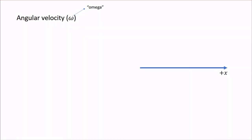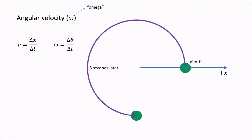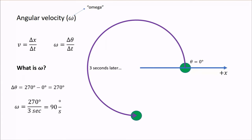Next, we have the concept of angular velocity. It is usually denoted by the Greek letter omega. You already know what velocity is — it is the change in position over time. Similarly, angular velocity is the change in angular position over time. For example, if your object starts at an angular position of 0 degrees and 3 seconds later it ends up at a position of 270 degrees, we first find the change in angular position, which is 270 degrees minus 0 degrees, equaling 270 degrees. We then divide by 3 seconds and find that the angular velocity is 90 degrees per second.